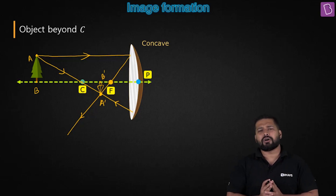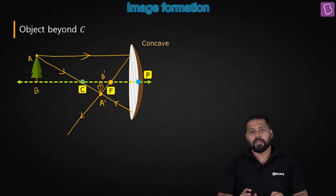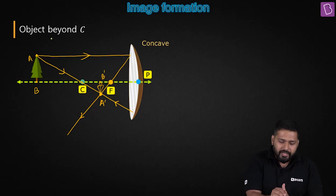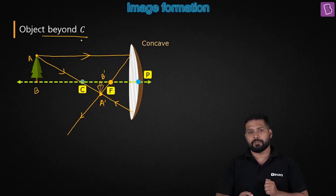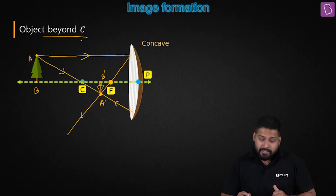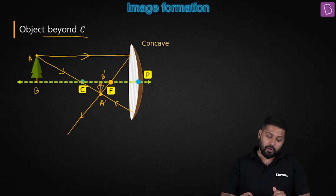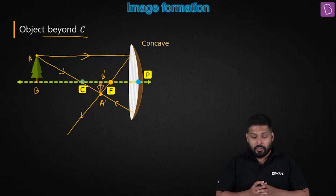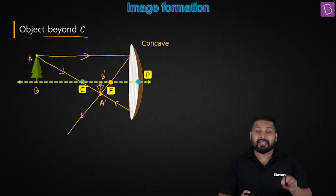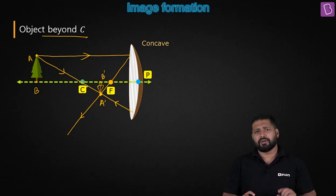The first question in terms of the characteristics of the image: where is the image located? First, where is the object located? The object is located beyond C — that is, beyond the center of curvature. Where is the image located? The image is located somewhere between C and F. The image is between C and F. Is it real or virtual? The reflected rays are actually meeting, so it is a real image. Real images are always inverted.